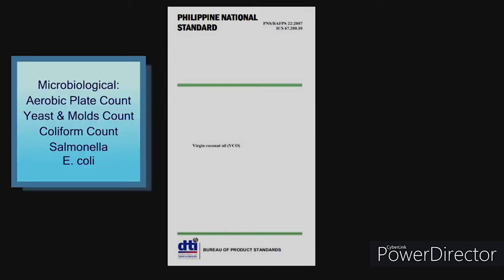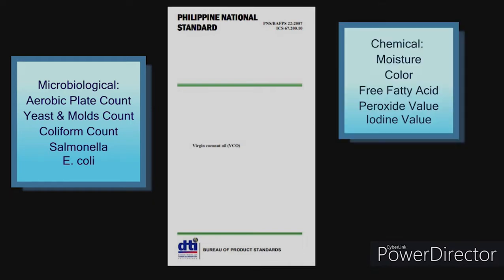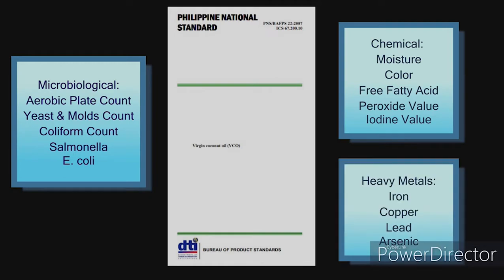For the complete microbiological analysis, there is the aerobic plate count, yeast and molds count, coliform count, salmonella, and E. coli. For the complete chemical analysis, there is moisture, color, free fatty acid, peroxide value, and iodine value. For the heavy metals analysis, there is iron, copper, lead, and arsenic.